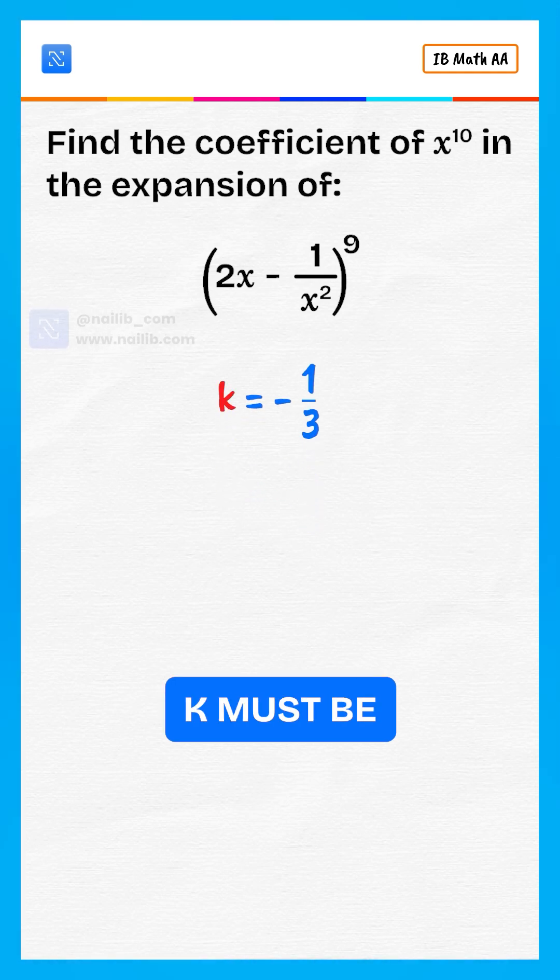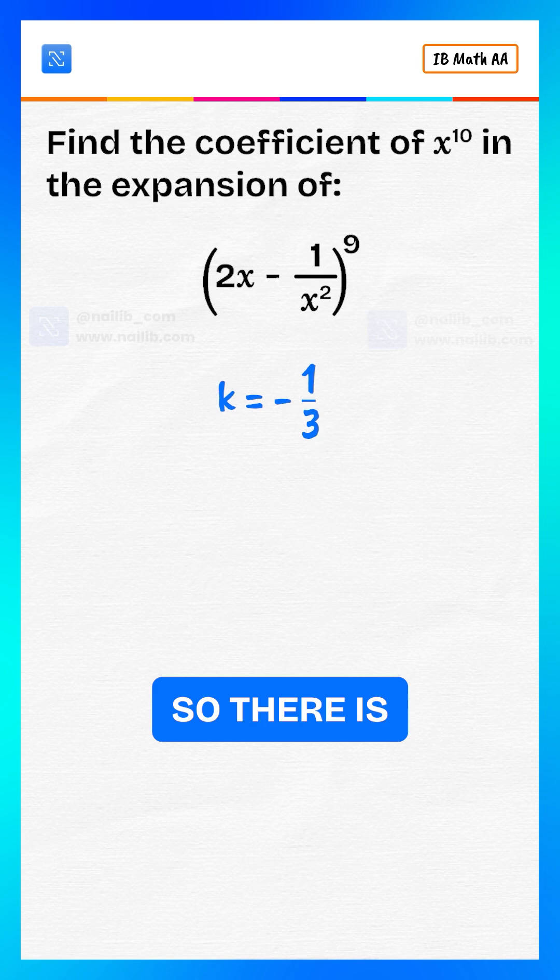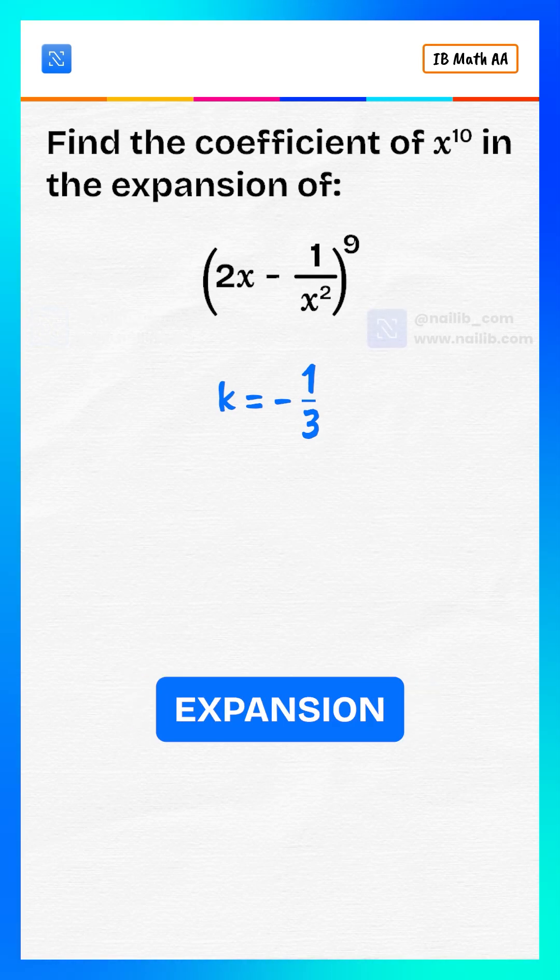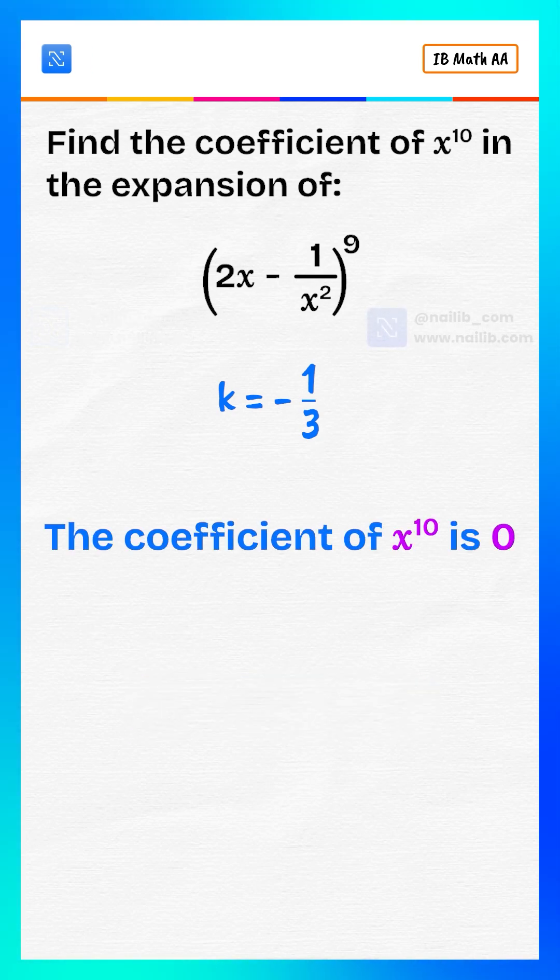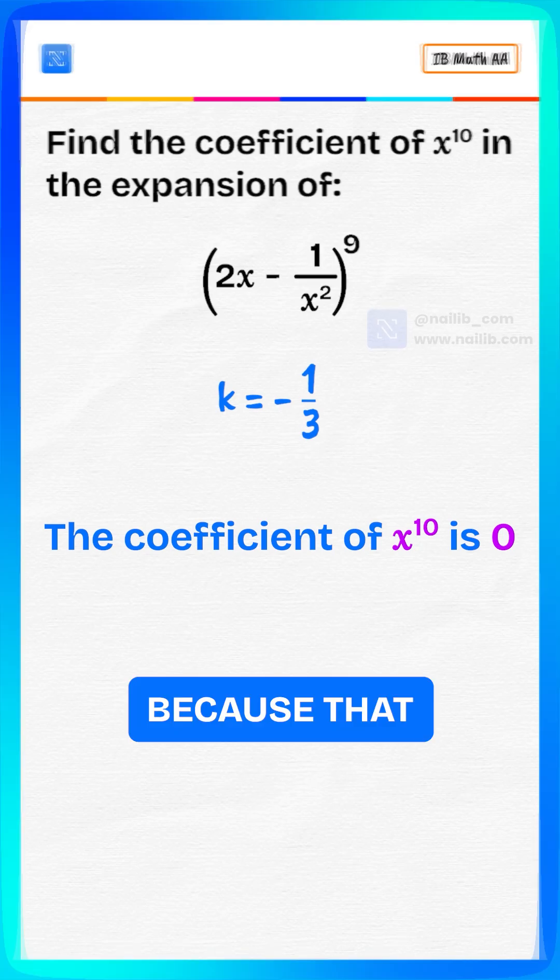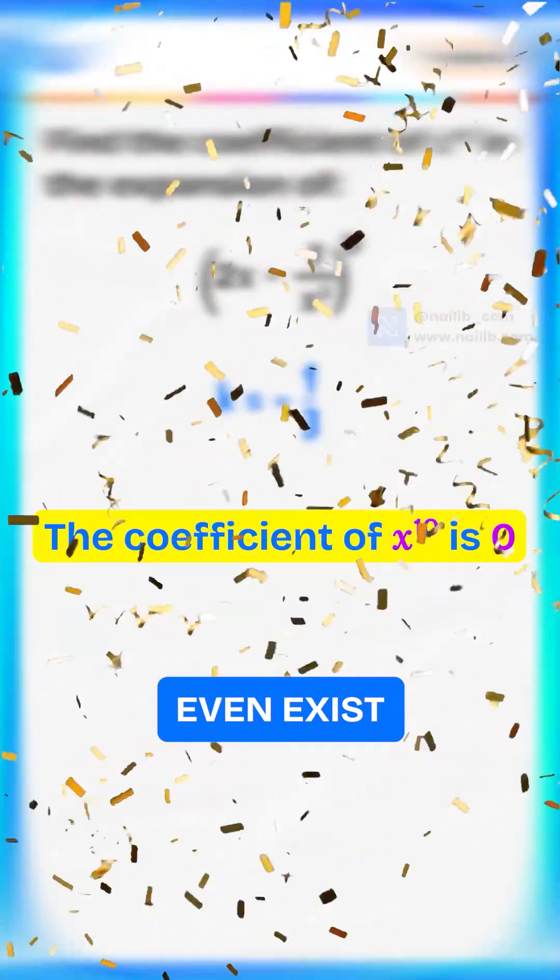But wait, k must be a whole number. So there is no such term in the expansion. The coefficient of x to the power of 10 is 0 because that term doesn't even exist.